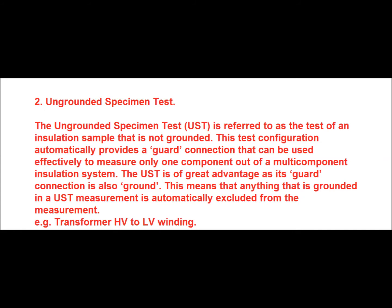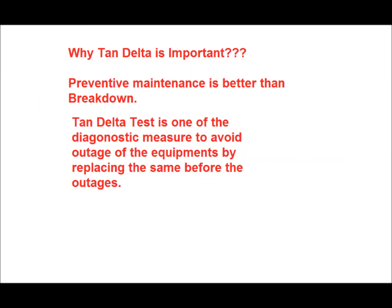For example, the transformer HV to LV winding insulation is measured in UST mode. It is always said that preventive maintenance is better than breakdown. In case of breakdown there is an outage, but in case of preventive maintenance we can change the equipment with a planned shutdown. Over time, the insulation of equipment deteriorates due to the existence of voids in the insulator. Tan delta test is one of the diagnostic measures to avoid outage of the equipment by replacing it before the outage.